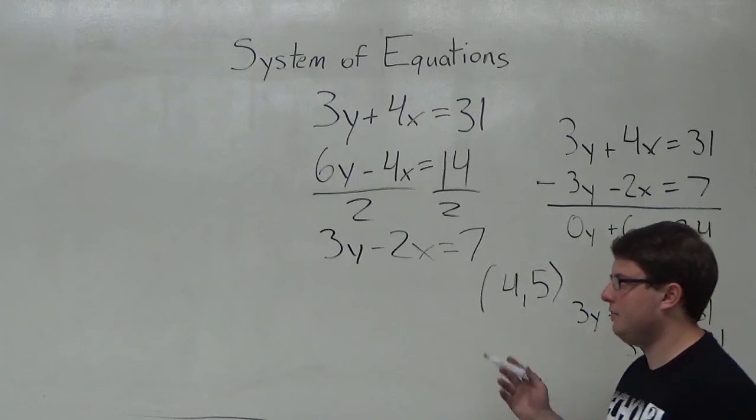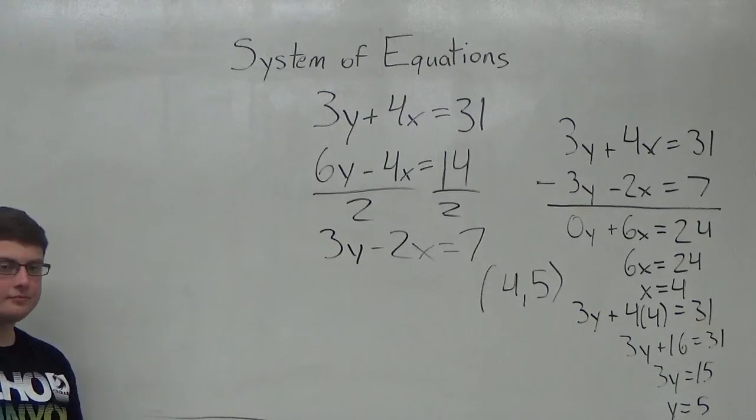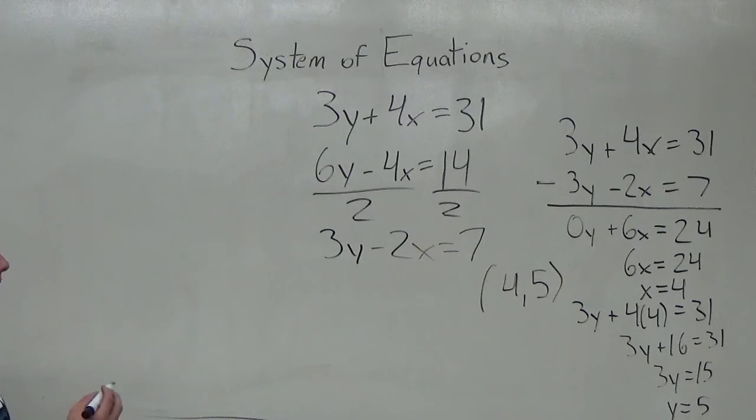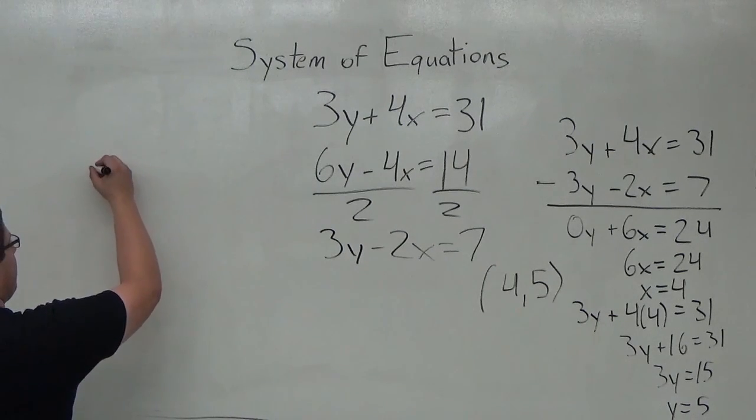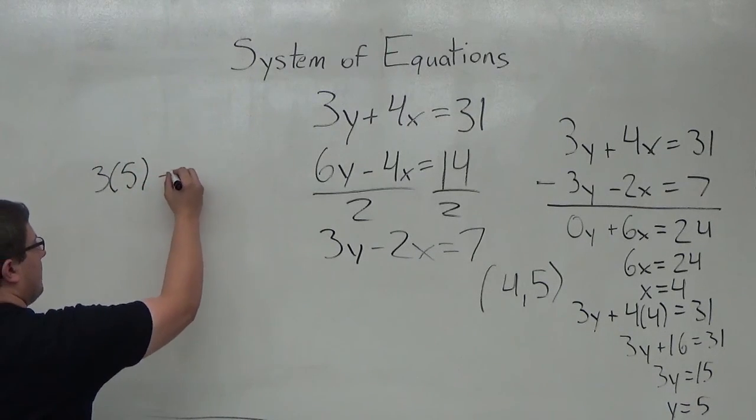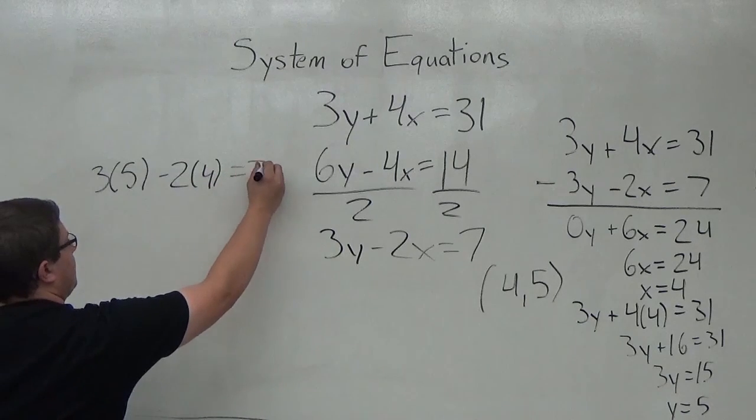I'm just going to do a simple check now on this side of the board over here. Using the point 4, 5, I'm going to use this new equation to check it and make sure everything works. So I'm going to do 3 times 5 minus 2 times 4 equals 7,